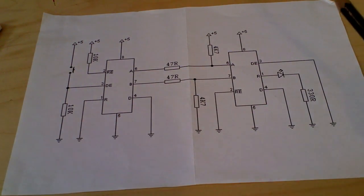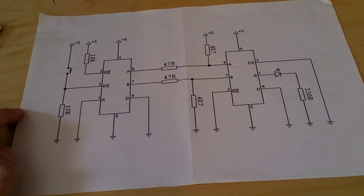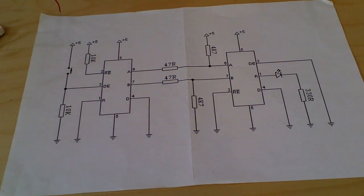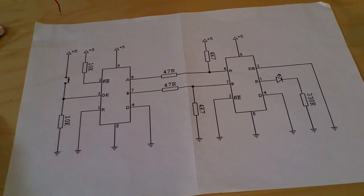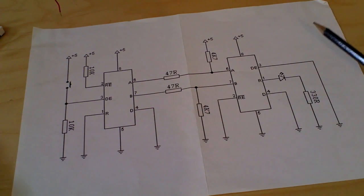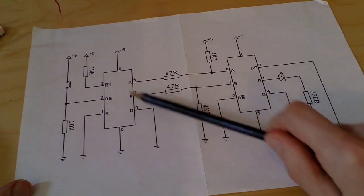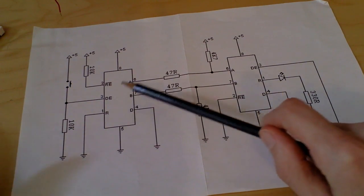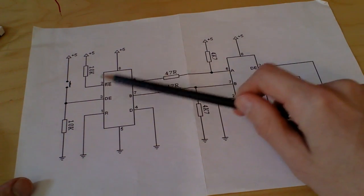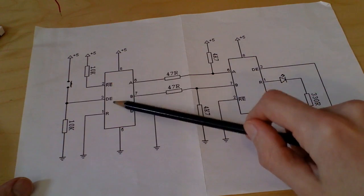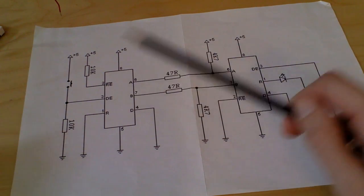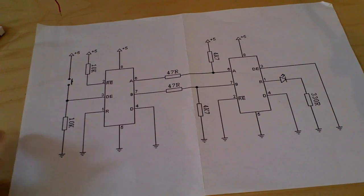So basically how I've got it is ordinarily with an RS485 link you would use the D and R as the data in and out pins and toggle the drive enable and receiver enable using the microcontroller.